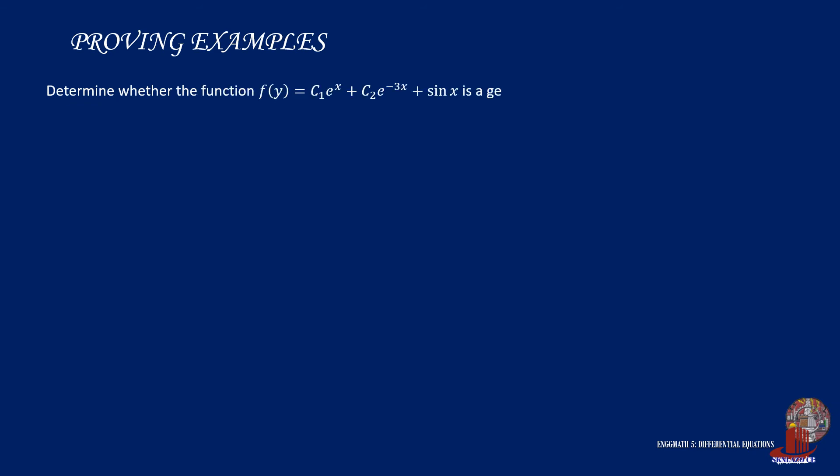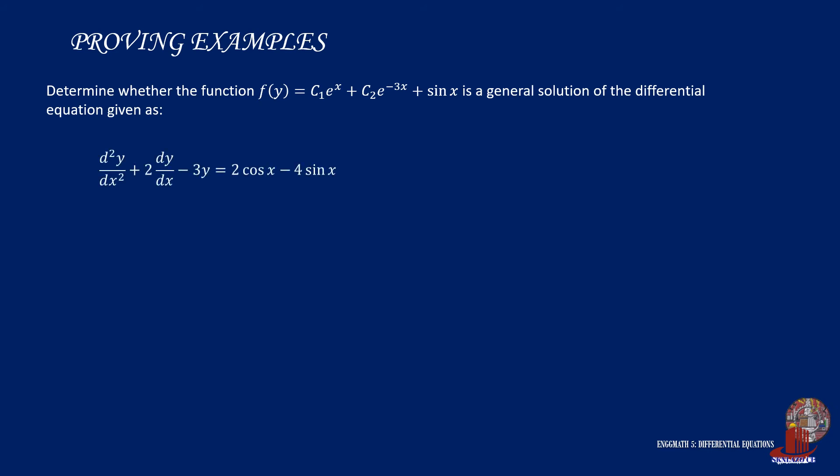Another process that can be done with DE solutions is proving. We determine whether the function f(y) equals c1 times e raised to x plus c2 times e raised to negative 3x plus sin x is a general solution of the differential equation: the second derivative of y with respect to x plus 2 times the derivative of y with respect to x minus 3y equals 2 cosine x minus 4 sine x.